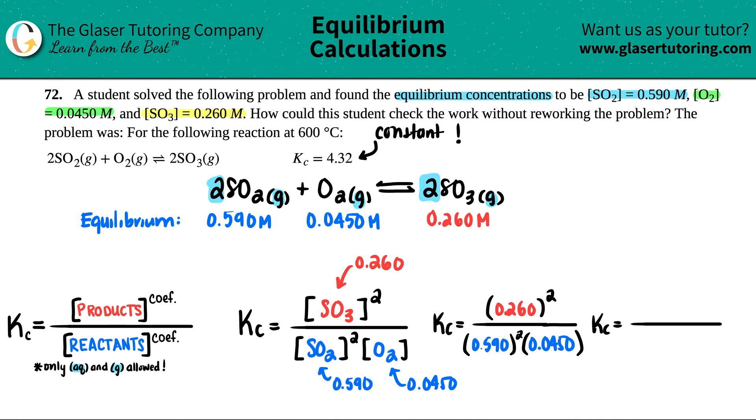But let's just see. I'm going to try not to round too much here because we're still not at the final answer. So the top, 0.26 squared is 0.0676.